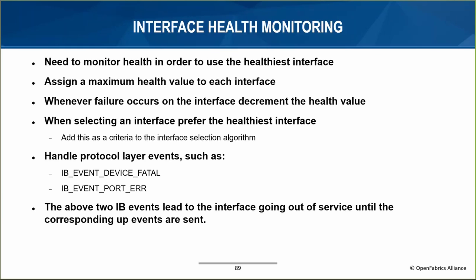LNet places the unhealthy interface on a recovery queue and pings it at regular intervals until it recovers to the maximum health value, after which it can be selected again. An interface will still be selected even with a lower health value than the maximum, provided it has the best health value among the other interfaces. LNet also monitors events from the offload layer, such as IB event device fatal or IB event port error — upon seeing these, LNet immediately puts the interface in a fatal state, exiting only when the corresponding up event is received. This logic is performed on every message sent to always select the best path.